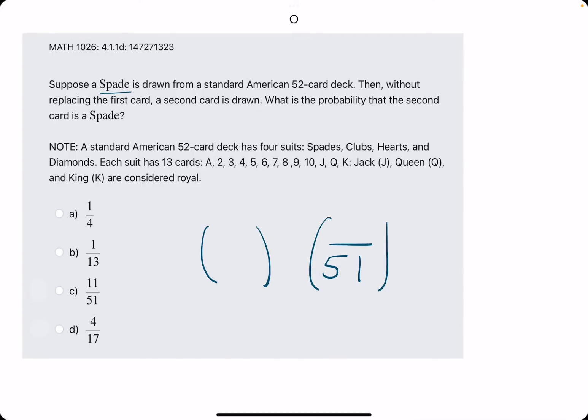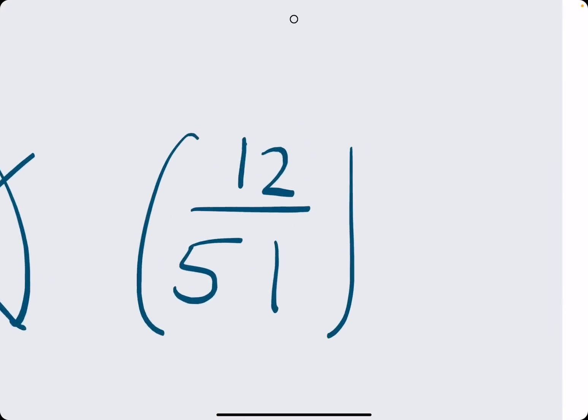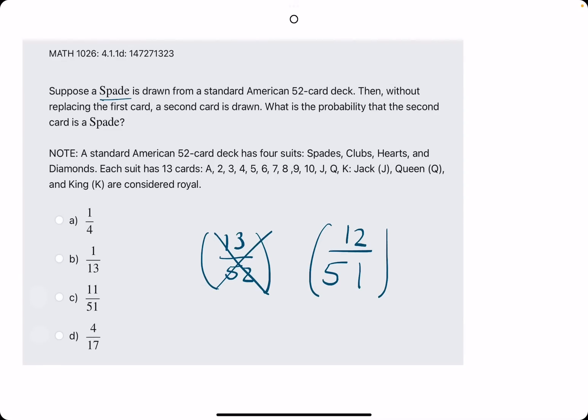So if originally there were 13 out of 52 spades, or 52 cards, 13 spades out of 52 cards, and we don't put that one spade back, that means there are now 12 spades out of 51 total cards, since we've kept that first card. So 12 over 51 is likely what they're looking for.